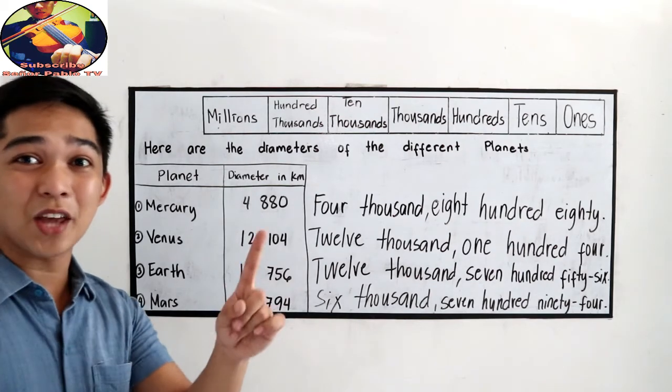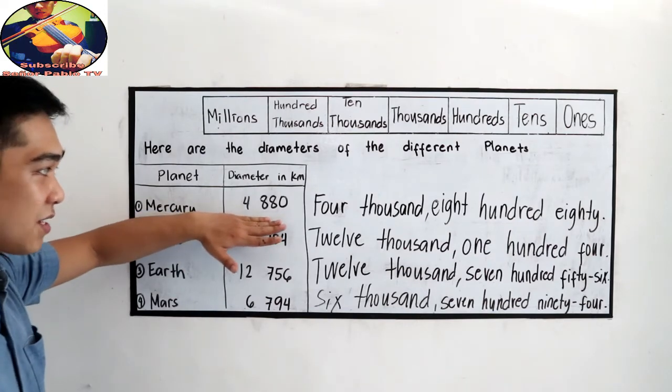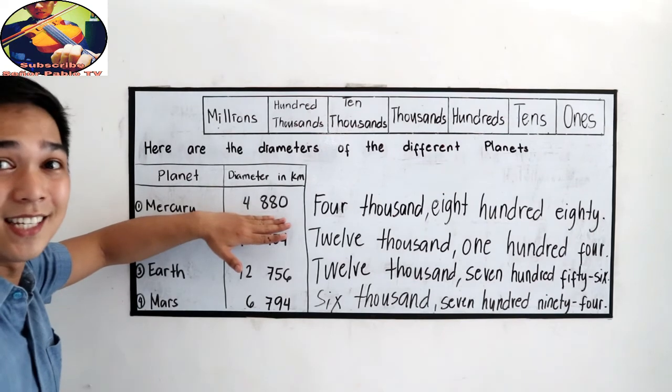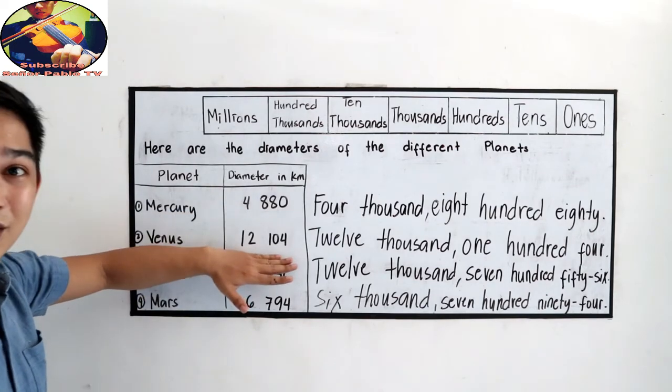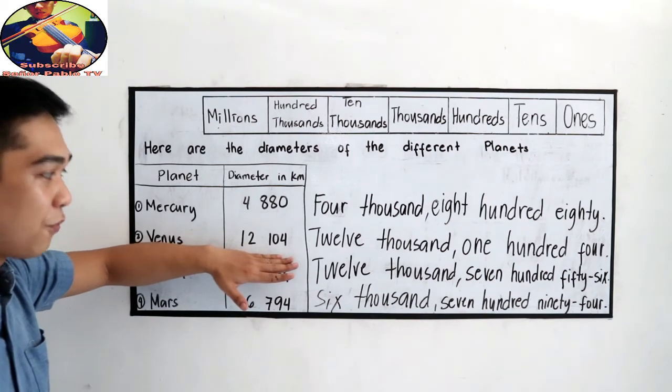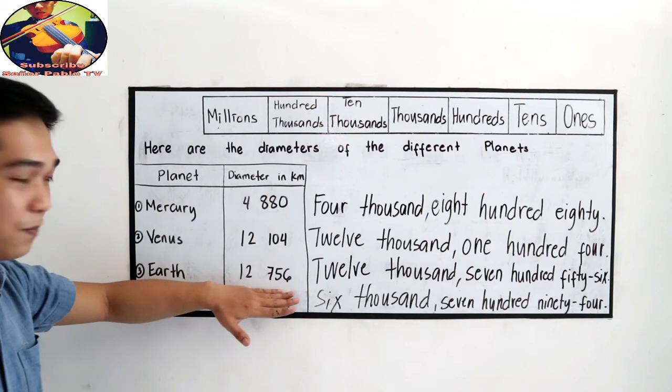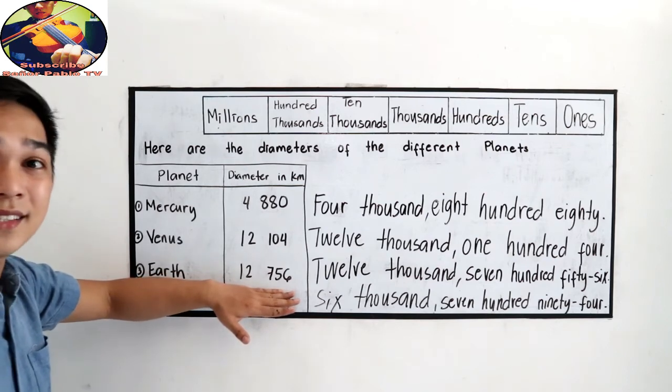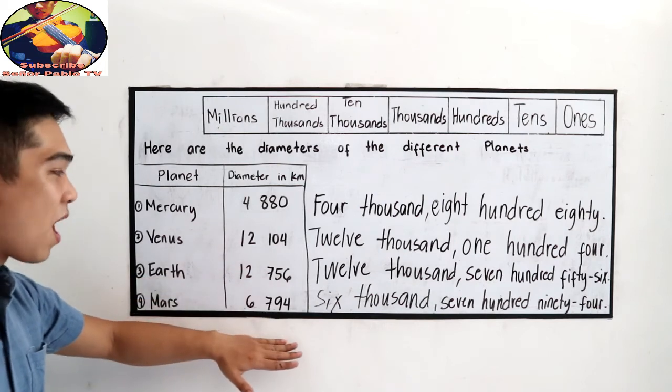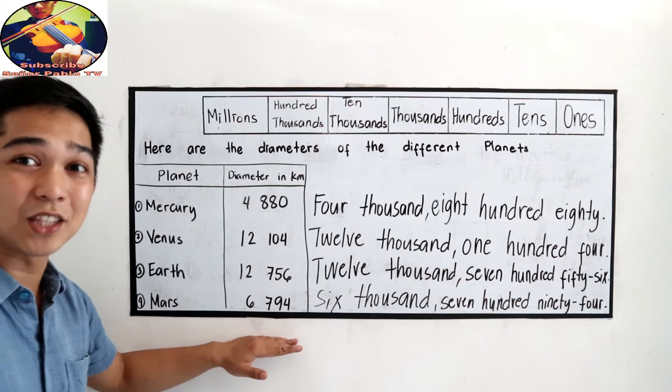Again, let us try to read it one by one. Mercury's diameter is four thousand eight hundred eighty. Venus, twelve thousand one hundred four. Earth, twelve thousand seven hundred fifty-six. Mars, six thousand seven hundred ninety-four.